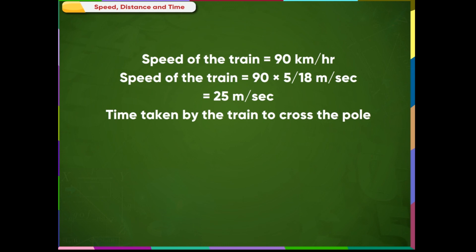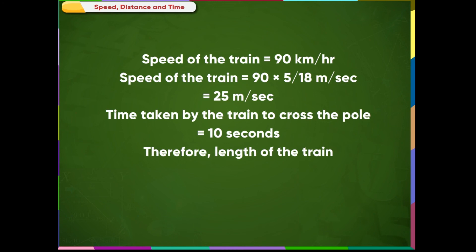Time taken by the train to cross the pole is equal to 10 seconds. Therefore, length of the train is equal to 25 meter per second multiplied by 10 seconds, which is equal to 250 meters.